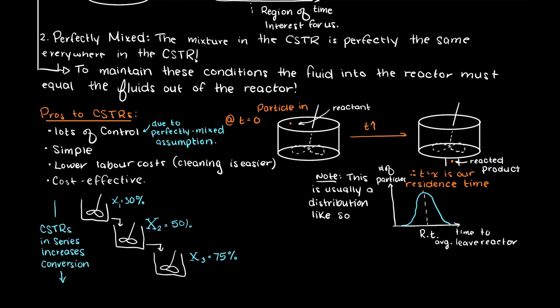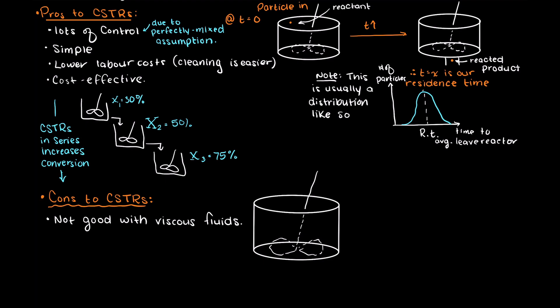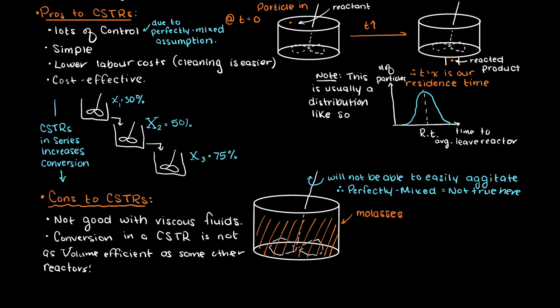So now that we know what CSTRs are great for, let's talk about some of their disadvantages. Firstly, CSTRs are not great with viscous fluids. Imagine we had something super viscous like molasses in our CSTR — the agitator would have a hard time moving that fluid, making our well-mixed assumption invalid, or we would need a very powerful motor and a strong paddle to shear the viscous fluid. Additionally, the conversion of a given reactant in the CSTR is not as volume efficient as some other reactors, so we may need a larger reactor to ensure our reactants sufficiently become products.